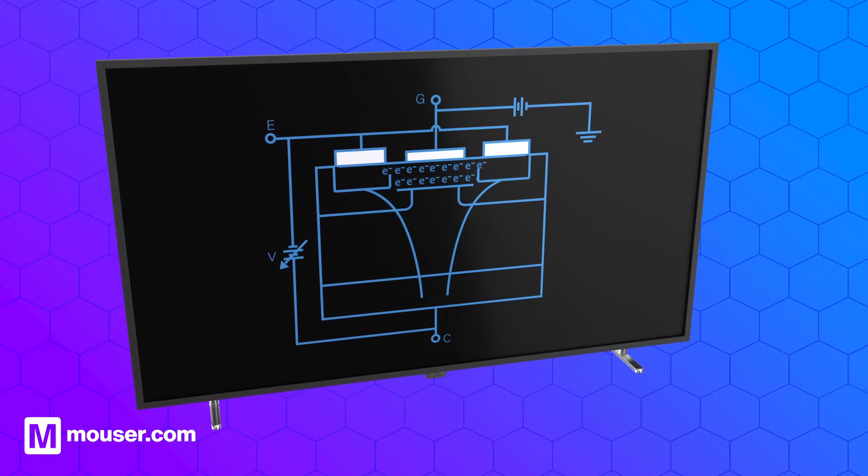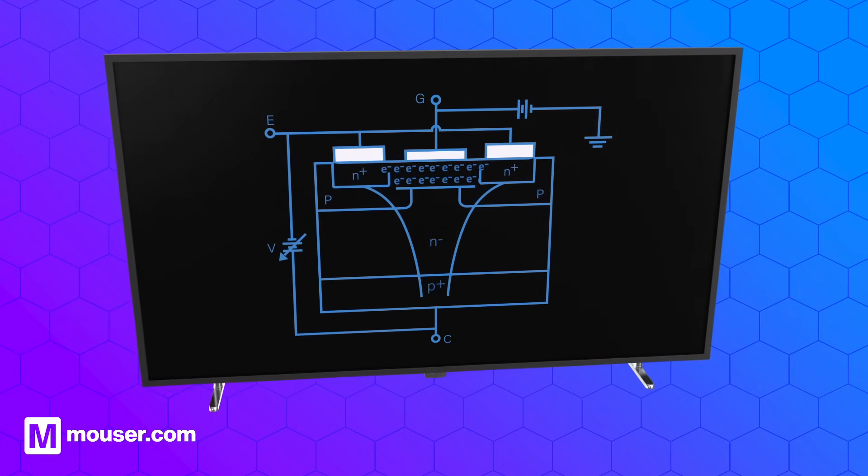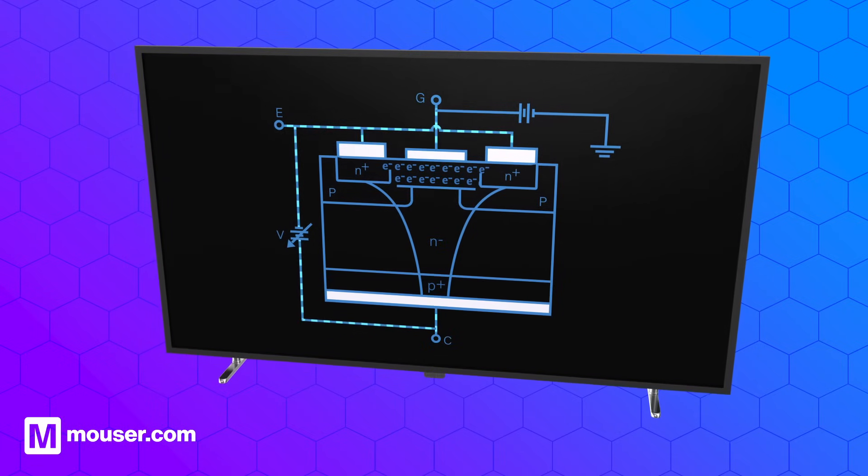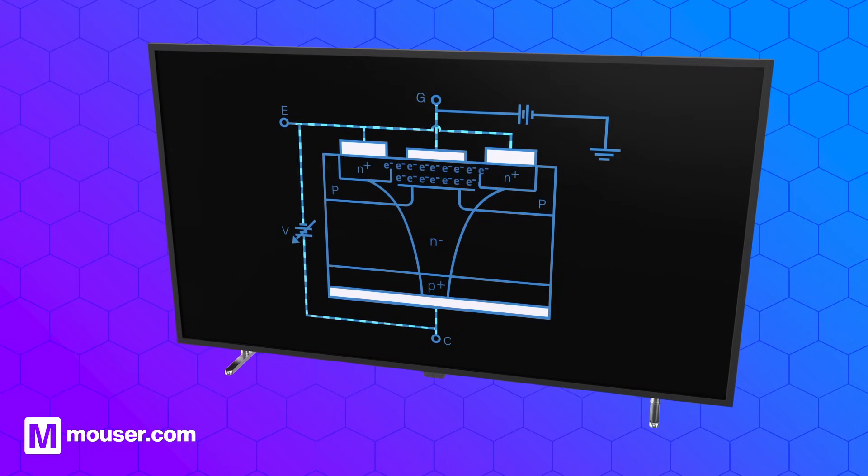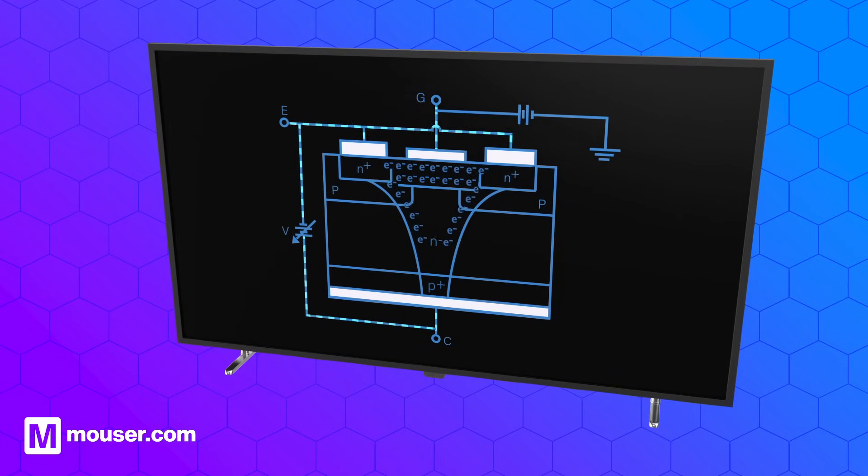An IGBT comprises three crucial layers: the N layer, the P layer, and an insulated gate. When voltage is applied to the gate, it generates an electrical field, deciding whether the IGBT allows or impedes the flow of current between the N and P layers.